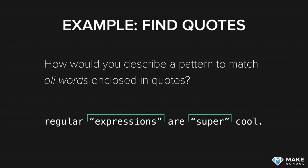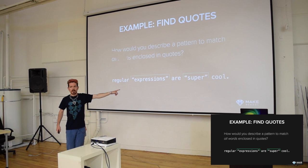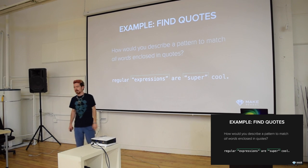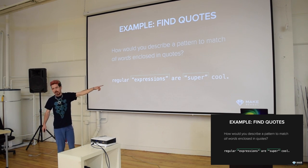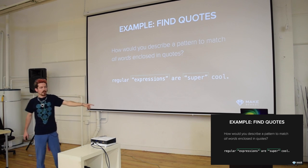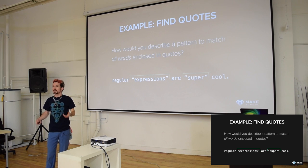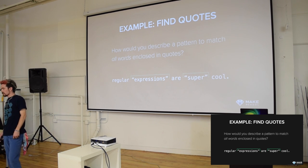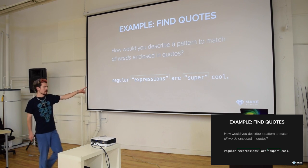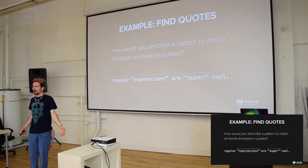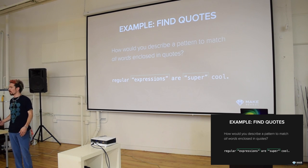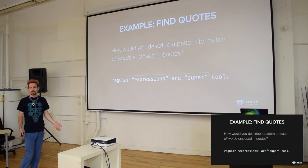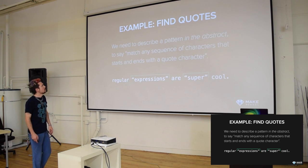Here's an example where we want to match quoted words. The technique works for properly closed quotes. But what if the closing quote after 'expressions' was left off? We'd match 'expressions are expression are' and 'super' would not get matched at all. Depending on how your program is written, it might try to match from that quote, reach the end of the file without finding a closing quote, and hopefully print a warning about an unmatched quotation.